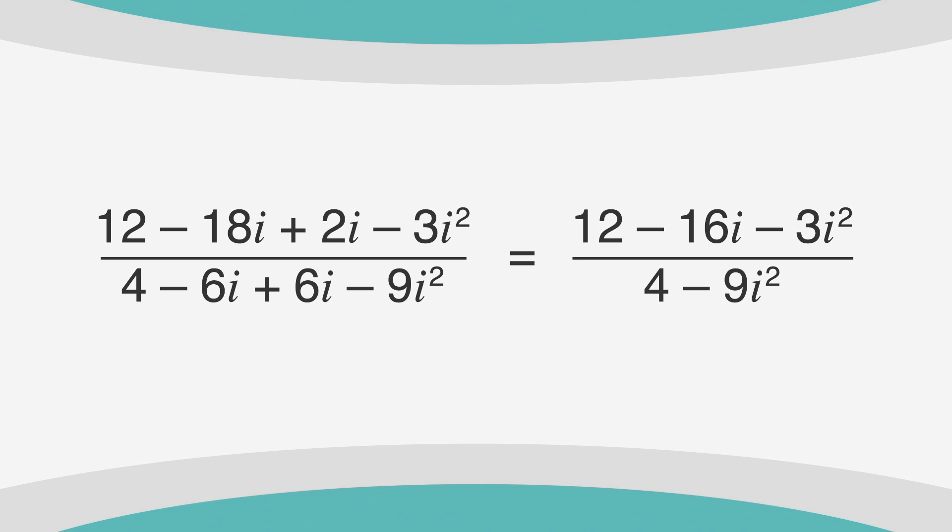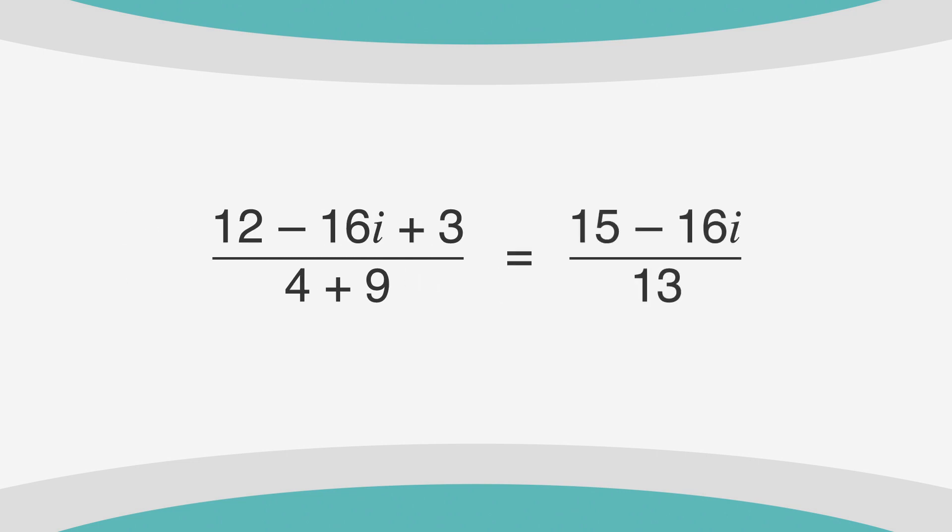We know that i squared equals negative 1, so let's plug that in. And we get 12 minus 16i plus 3 over 4 plus 9. A little more arithmetic, and we get 15 minus 16i over 13.